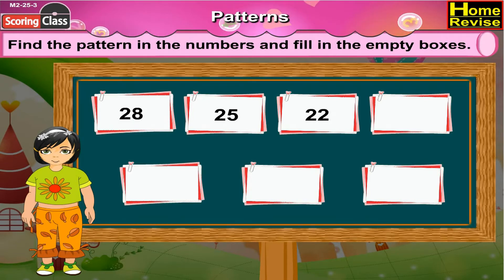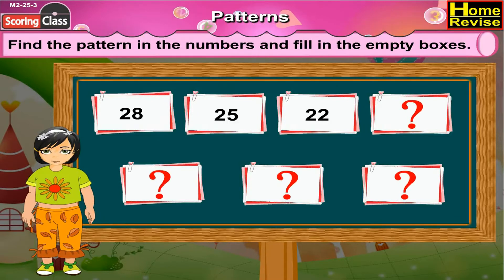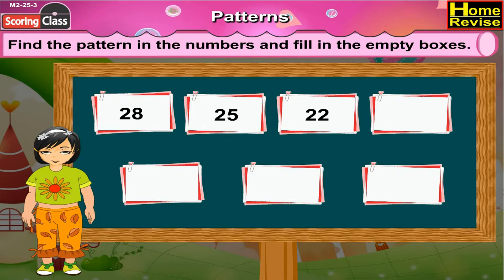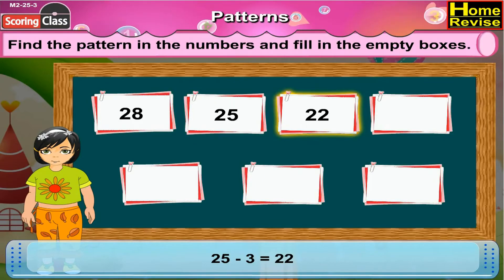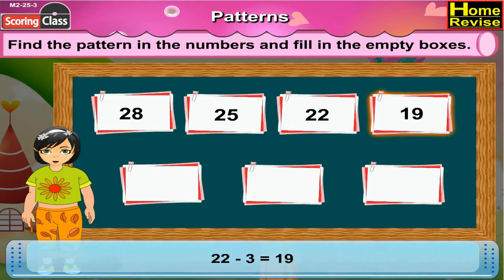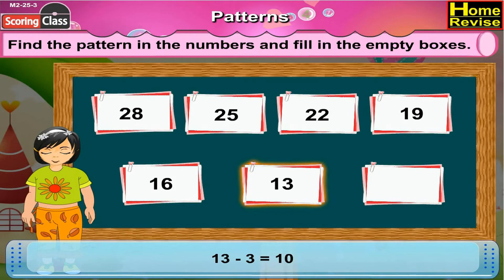Now the next number strip. It has 28, 25, 22 followed by 4 empty boxes. Now if you notice, if we subtract 3 from each number, we will get the succeeding number. 28 minus 3 is 25. 25 minus 3 is 22. Now the next number would be 22 minus 3, that is 19. The next number is 19 minus 3, which is 16. The next number is 16 minus 3, that is 13. And the last number is 13 minus 3, that is 10.